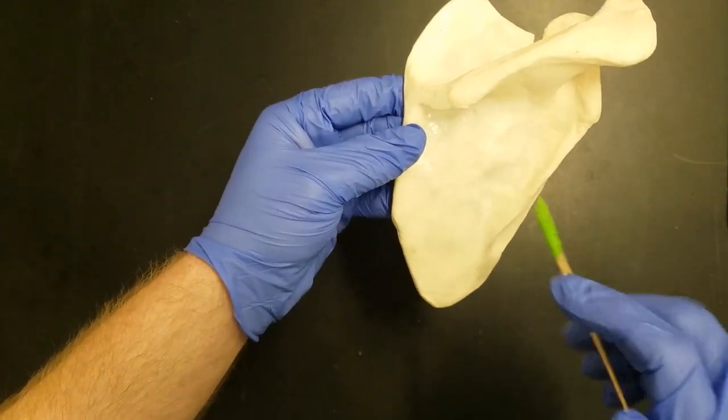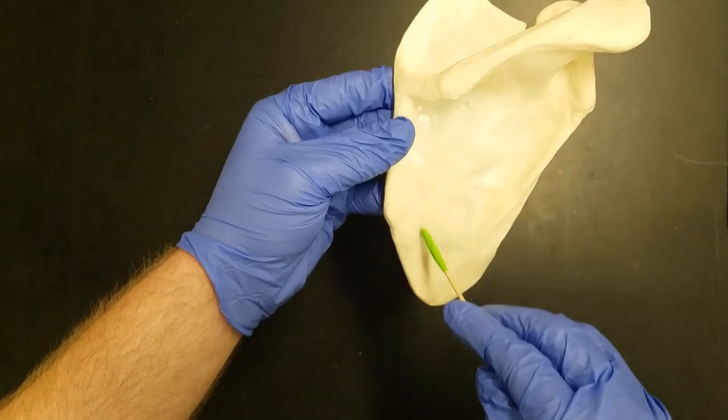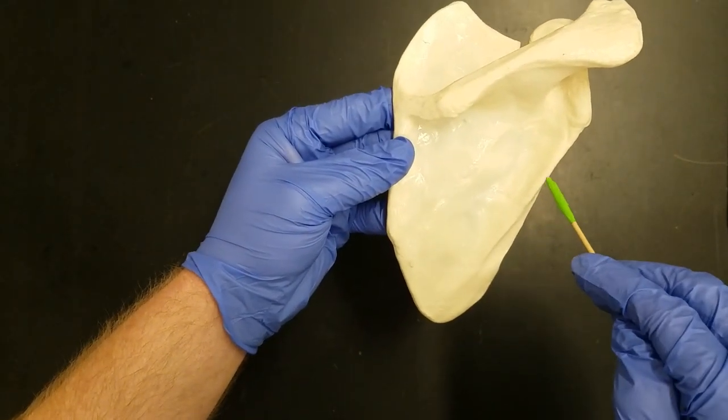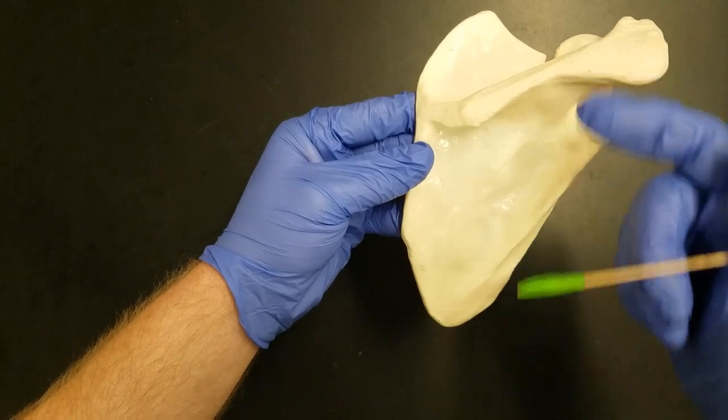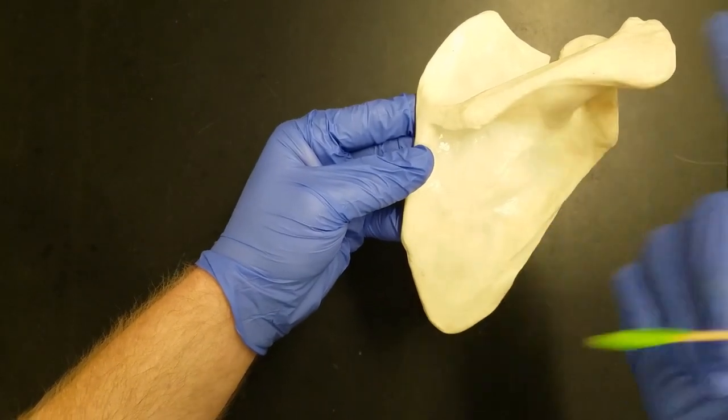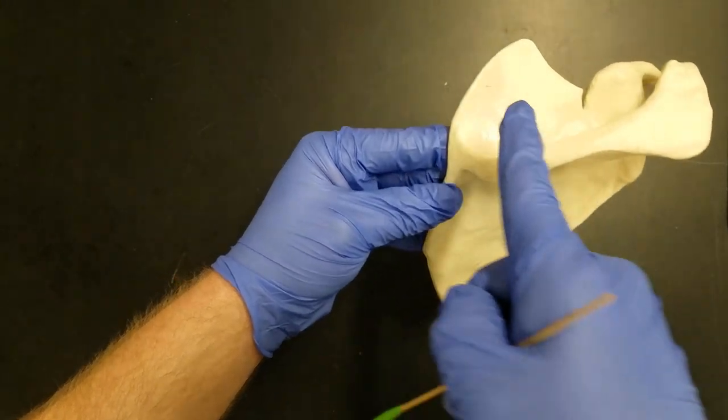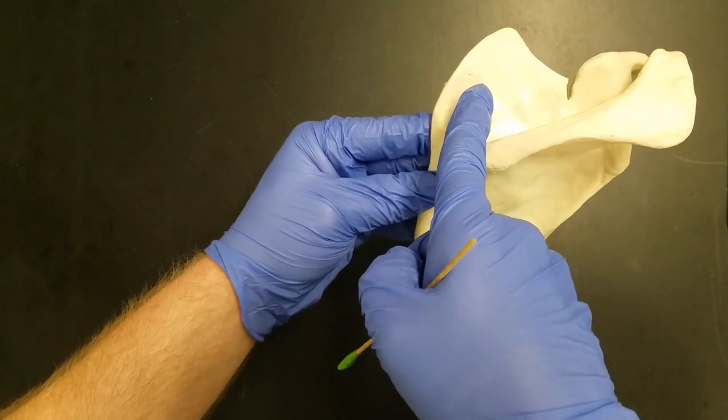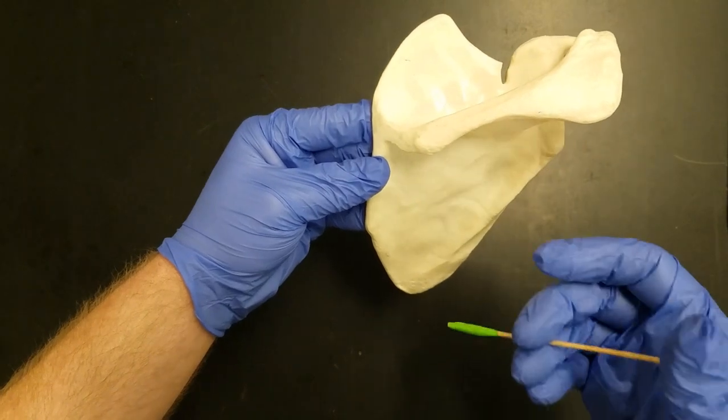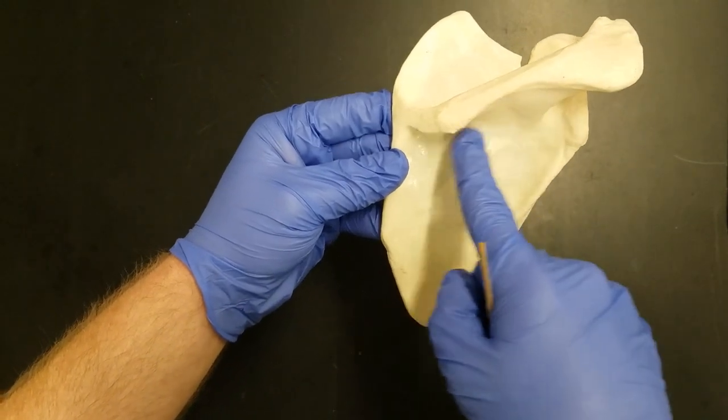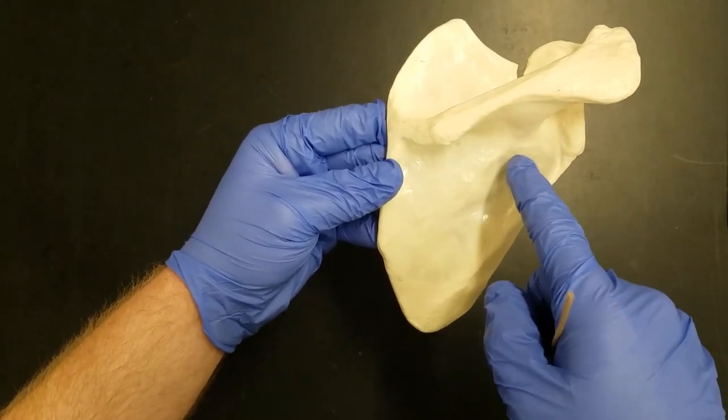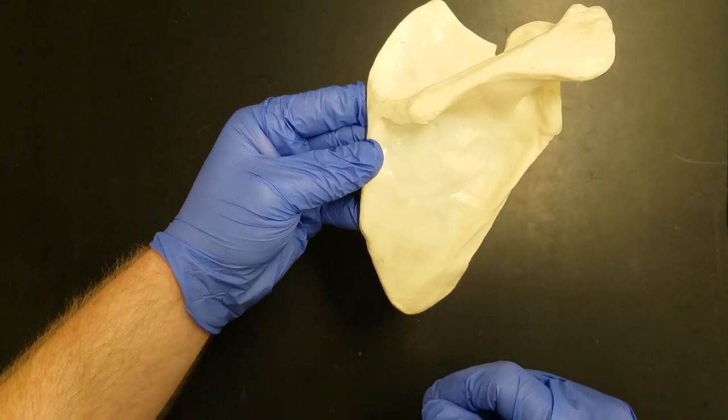Below the spine, we have the infraspinous fossa. Infra means inferior or below, spinous refers to the spine, and fossa means depression. The supraspinous fossa serves as the attachment site for the supraspinatus muscle, while the infraspinous fossa serves as the attachment site for the infraspinatus muscle.